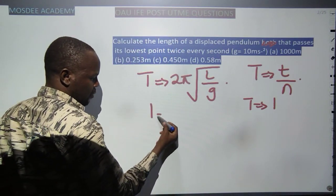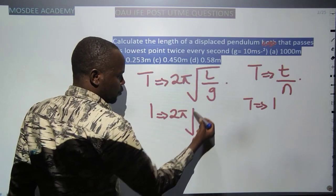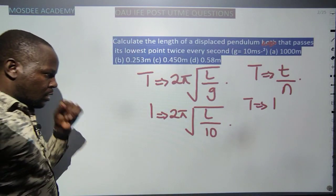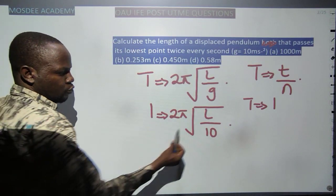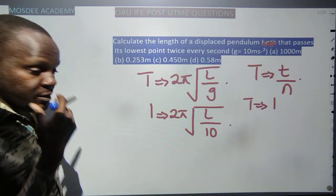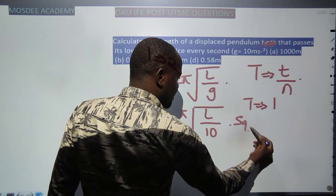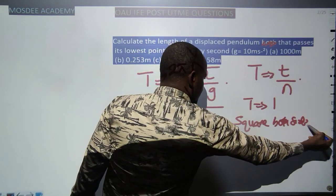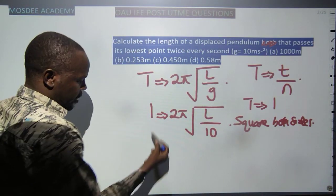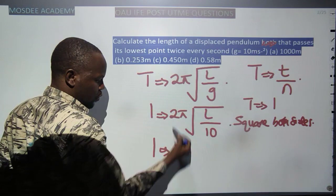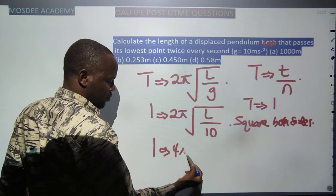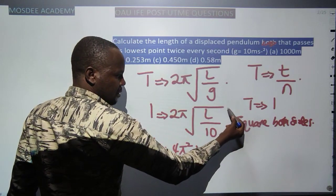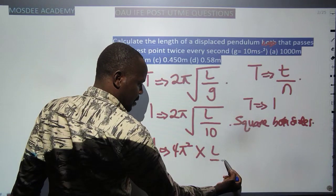Substituting T = 1: we have 1 = 2π√(L/10). To remove the square root, we square both sides: 1² = (2π)² × (L/10), giving 1 = 4π² × (L/10). Cross-multiplying: 10 = 4π²L, so L = 10/(4π²).